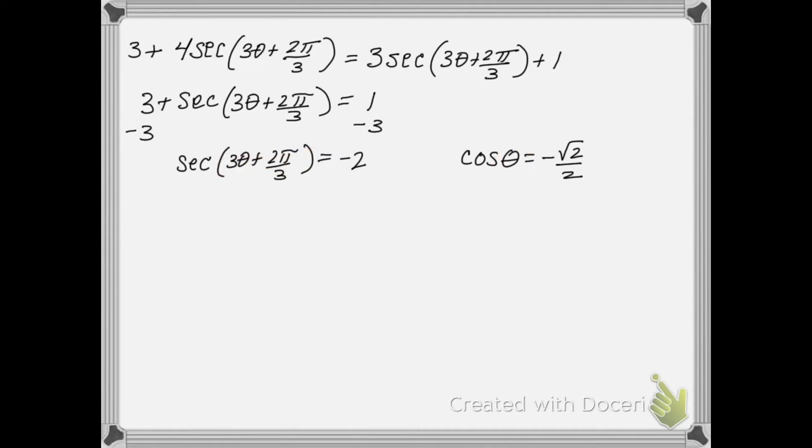What will help us over this complexity is to do a substitution. I'm going to say we will let beta equal 3 theta plus 2 pi over 3. Then when I look at this secant beta equal to negative 2, now that looks more like the other equation that I have, except I have a beta instead of theta.